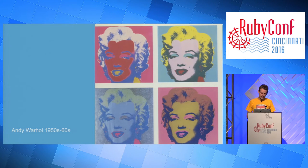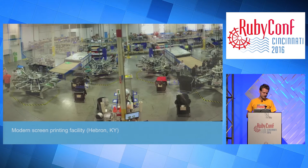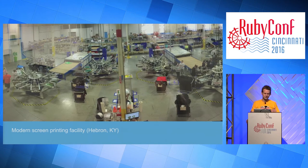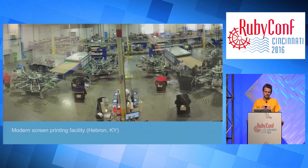Today, a factory that does screen printing looks a lot like this — it's come a long way in a thousand years. This is our facility in Hebron, Kentucky, which we call Mercury. It's about 15 minutes from here. At this point I should tell you a little bit about what we do to give you context for some of the stuff I'm talking about.